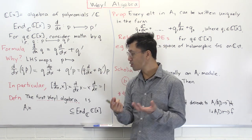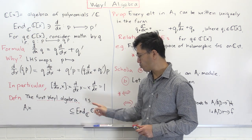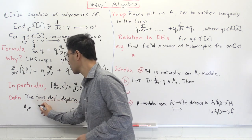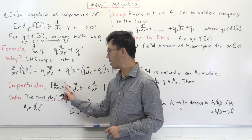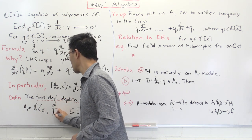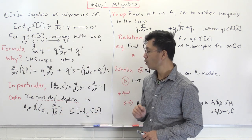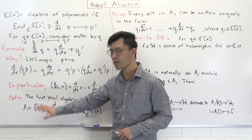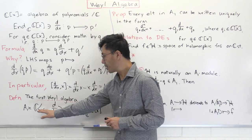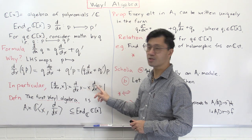Now we're ready to define the first Weyl algebra. It's going to be a sub-algebra of the endomorphism algebra of C[x] — an algebra over C, so it will contain C. It's generated by x and also d/dx: it's the smallest C-subalgebra of this endomorphism algebra which contains both x and d/dx. This algebra is already non-commutative because the commutator between x and d/dx is not zero — it's equal to 1.